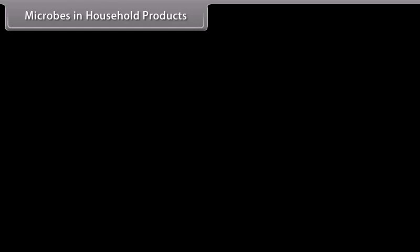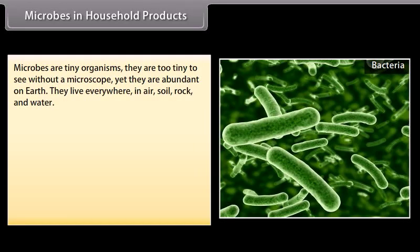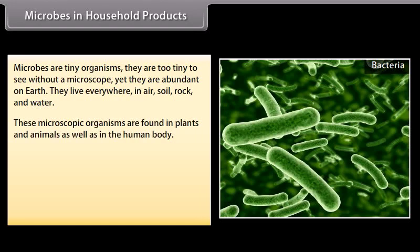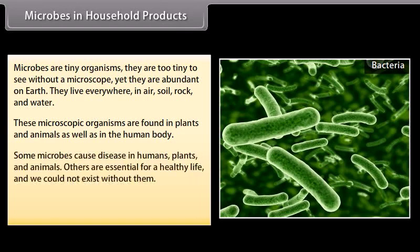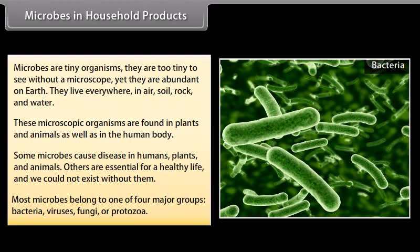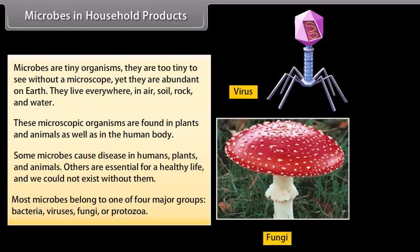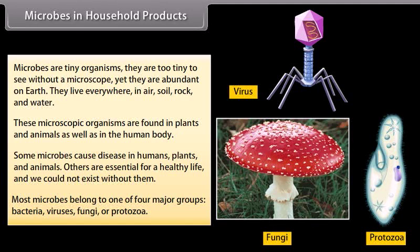Microbes in household products. Microbes are tiny organisms — they are too tiny to see without a microscope, yet they are abundant on earth. They live everywhere: in air, soil, rock and water. These microscopic organisms are found in plants and animals as well as in the human body. Some microbes cause diseases in humans, plants and animals; others are essential for a healthy life and we could not exist without them. Most microbes belong to one of four major groups: bacteria, viruses, fungi or protozoa.